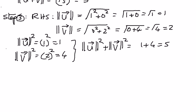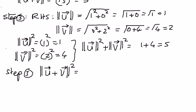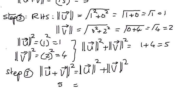Therefore, we see that the magnitude of vector u plus vector v raised to the power of 2 is exactly equal to the magnitude of u raised to the power of 2, plus the magnitude of v raised to the power of 2. On the left-hand side the value we obtained was 5, and on the right-hand side we also got 5. Therefore the left-hand side is exactly equal to the right-hand side, and the Pythagorean theorem is useful and applicable to vectors as well. In my next presentation, we shall look at some more examples related to orthogonal vectors and using the Pythagorean theorem.